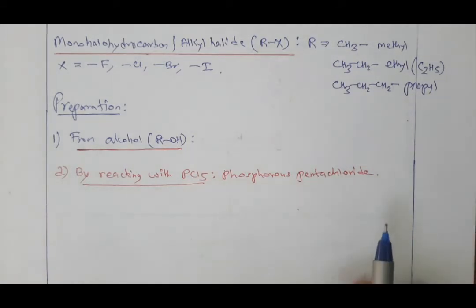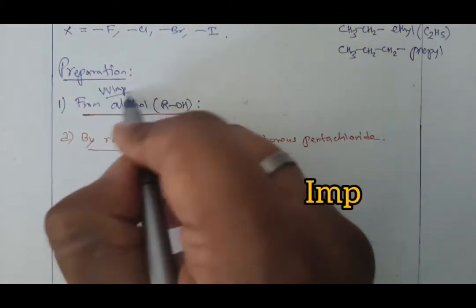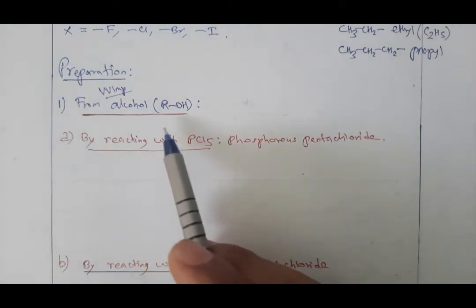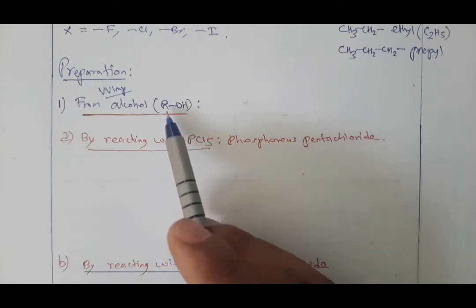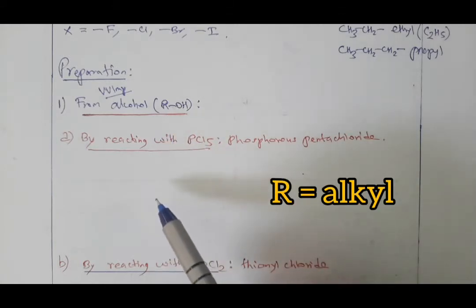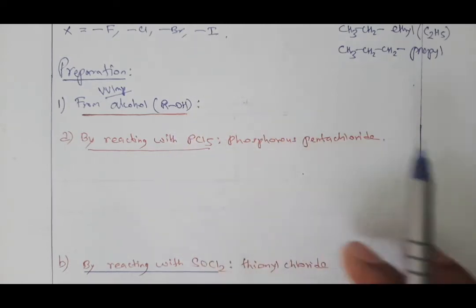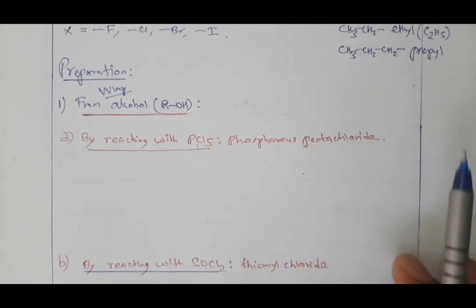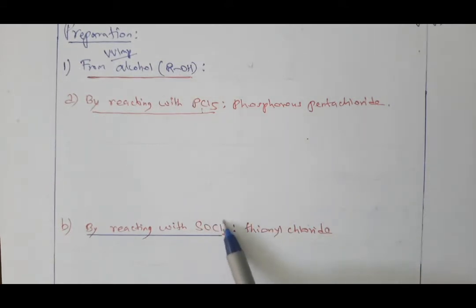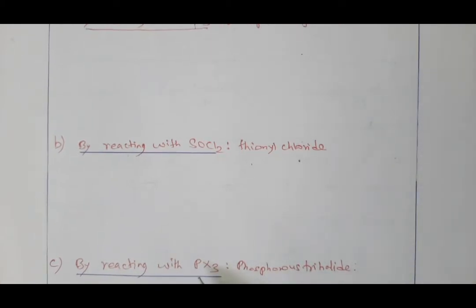Now we are going to see its preparation. The first preparation — very very important — is from alcohol. The general symbol for alcohol is ROH, where OH means alcohol and R means alkyl group. We can prepare alkyl halide from alcohol in three ways: by reacting with PCl5 (phosphorus pentachloride), by reacting with SOCl2 (thionyl chloride), or by reacting with PX3 (phosphorus trihalide).